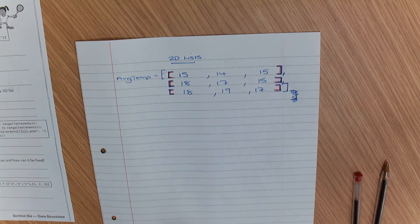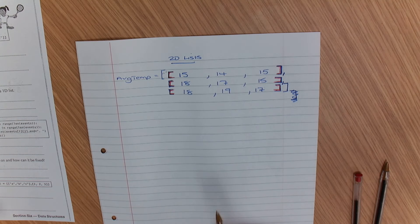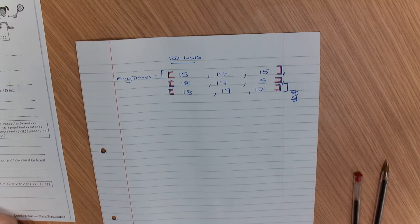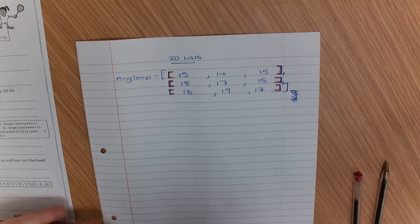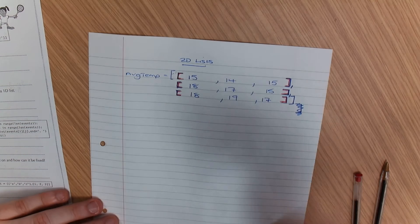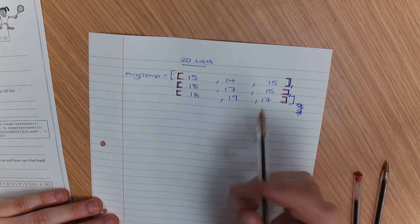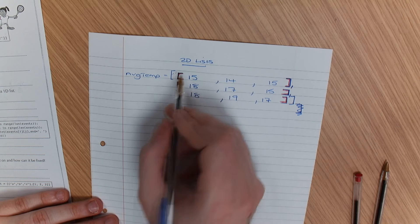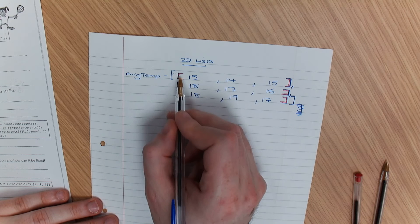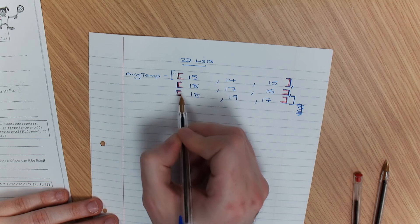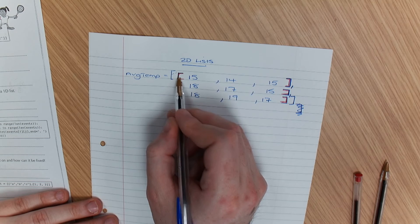Now there's something different going on with 2D arrays. The way that these work is you have rows and columns. So you have your row and your column. Each one of these is classed as a row.